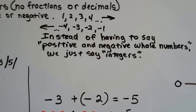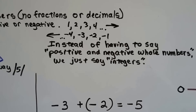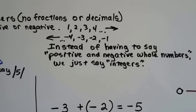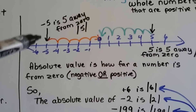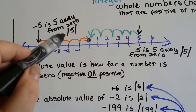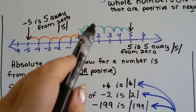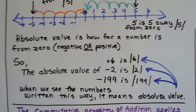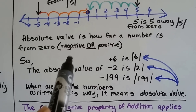Instead of having to say 'positive and negative whole numbers,' all we say is 'integer.' It takes the place of those five words and shortens them, so we can save our breath. Now let's look at the number line. Negative five is five away from zero, so its absolute value is five — we put the vertical lines on each side to denote absolute value. Positive five is also five away from zero, so its absolute value is five too. Whether negative or positive, it's five spaces from zero.